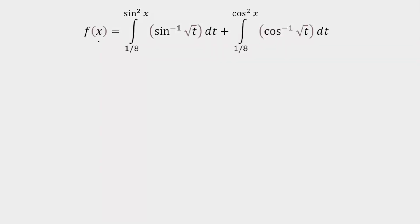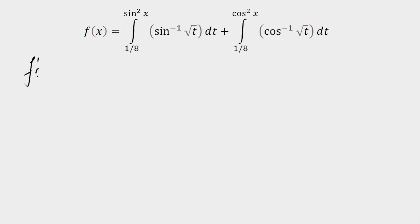In order to calculate f of x, the first thing you might do is integrate both terms individually using integration by parts, or substitute the individual function as θ and proceed. But that will be very lengthy here. Instead, we're going to differentiate the function with respect to x — you'll understand why immediately. So differentiating with respect to x, I'm going to use Leibniz theorem here, because the upper limits are variable.